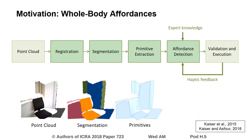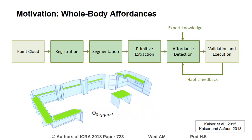In another previous contribution, we proposed a perception pipeline for the detection of whole-body affordances in unknown environments. The pipeline simplifies the environment into geometric primitives and then evaluates affordance-belief functions based on multimodal information. Affordance-belief functions can, for example, represent support affordances as depicted in the image below. The extraction of affordances has been successfully used for controlling humanoid robots in unknown environments in cooperation with a human pilot.